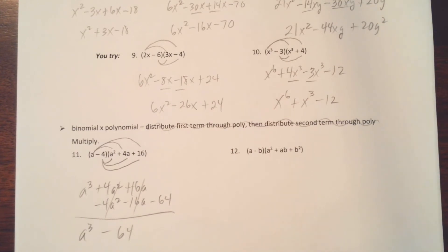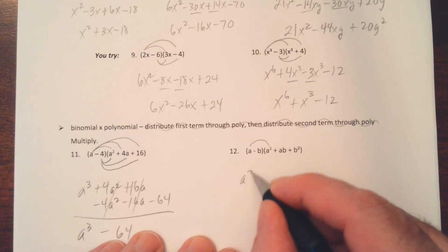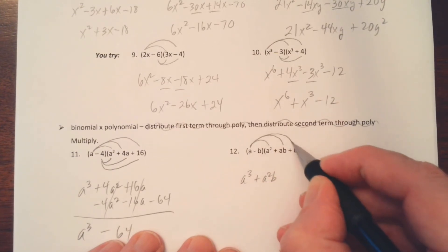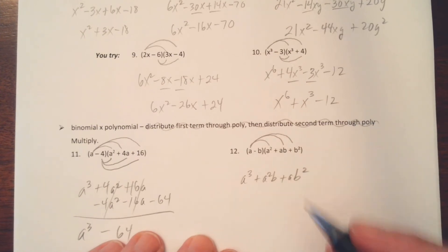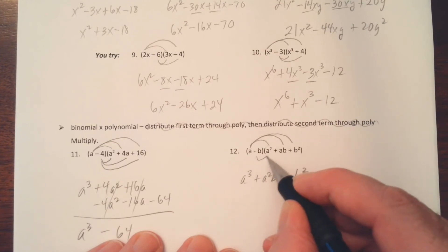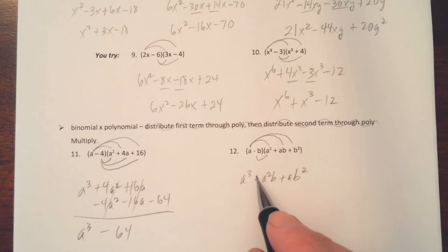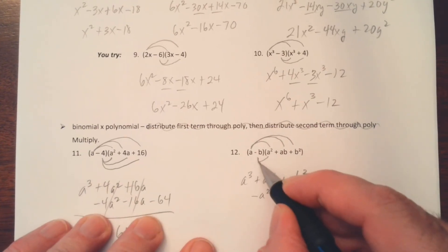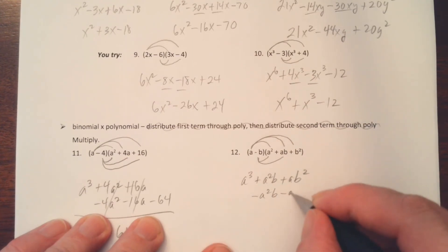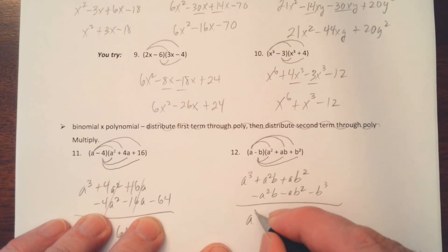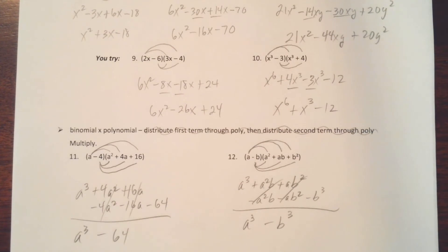Try number 12 and check your answer. a times a squared is a cubed, a times ab is plus a squared b, and a times b squared is plus ab squared. Then distributing negative b: negative b times a squared written in alphabetical order gives minus a squared b, then minus ab squared, and finally negative b times b squared is minus b cubed. We end up with a cubed minus b cubed — another special case. Combine your like terms and you'll be fine.